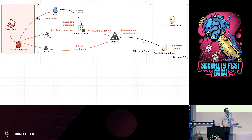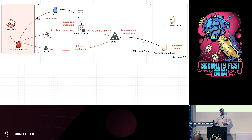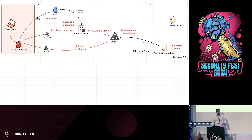Going back to the graph: the threat actor was local admin on the AD Connect server that syncs all the hashes. They extracted the service account responsible for syncing hashes, which also has privileges to take over applications. They took over an app, generated an application secret, made their own user global admin, and then exfiltrated data — which we haven't really covered, but it's not that interesting to just see a bunch of downloads.